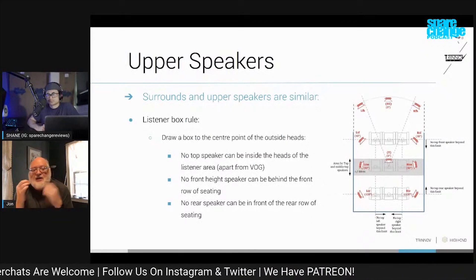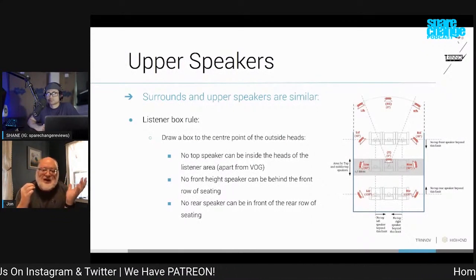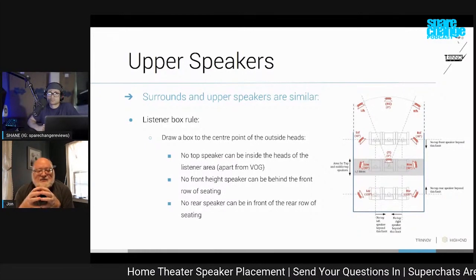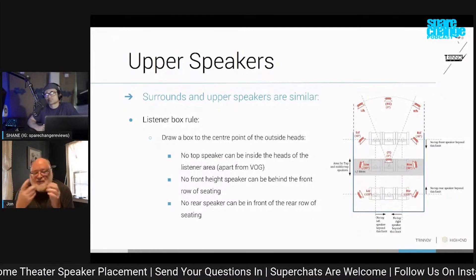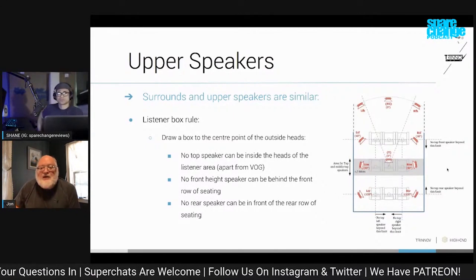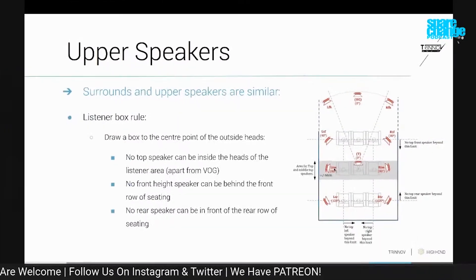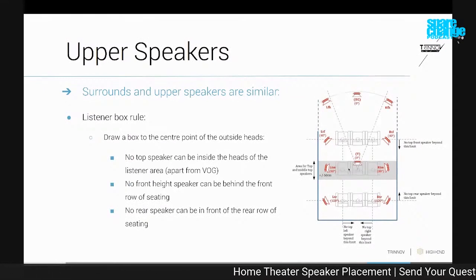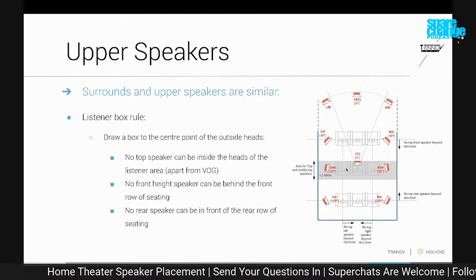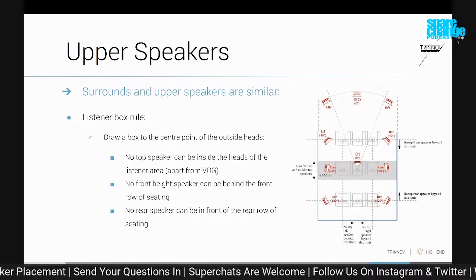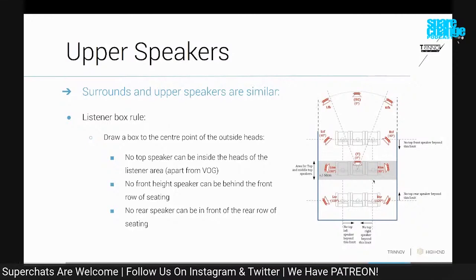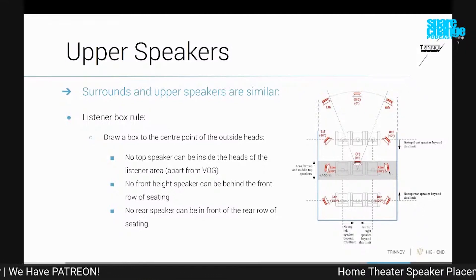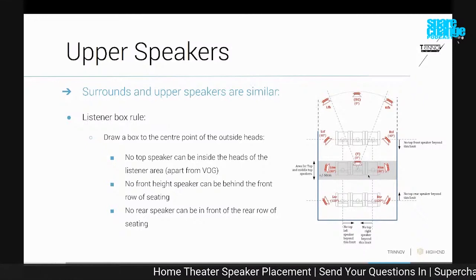You're trying to make sure that anything designed to sound above and to the left is above and to the left, and above and to the right is to the right. The only thing that should be inside the listening area is the so-called Voice of God, or height, or overhead, or top channel. No top speaker can be inside the heads of the listening area other than the Voice of God. If I put a speaker here for the left top middle, that's going to be perceived as being to the right for that guy. You have to look at the people at the perimeter and make sure anything to the left is to the left of that person and anything to the right is to the right, to make sure they perceive the soundtrack the way it was designed to be perceived.